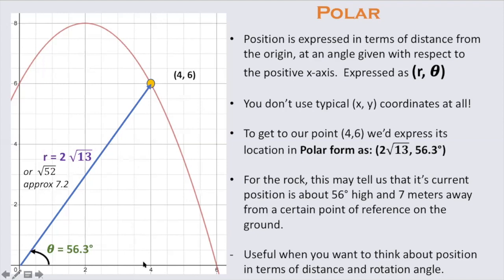I got that length by doing the Pythagorean theorem. a squared plus b squared equals c squared. I had a 4 squared and 6 squared. If you do that, you get root 52, which is 2 root 13, or approximately 7.2.